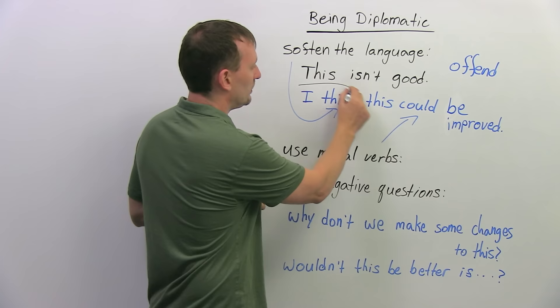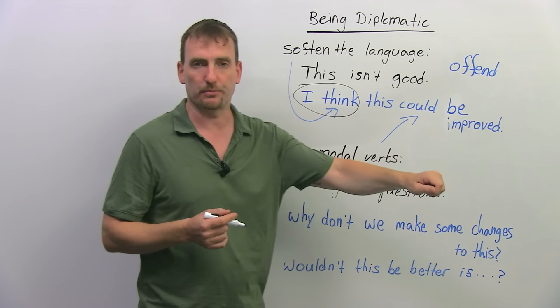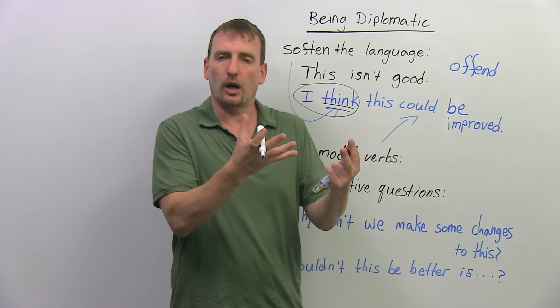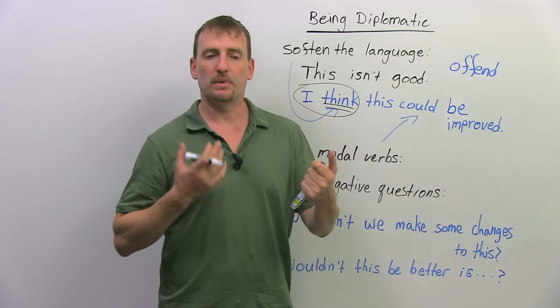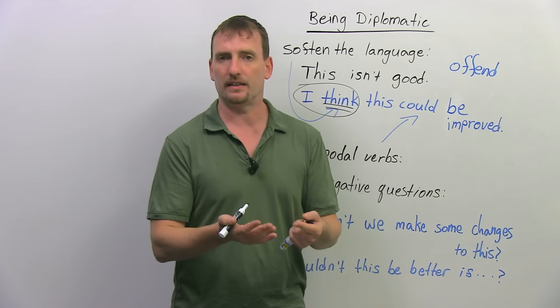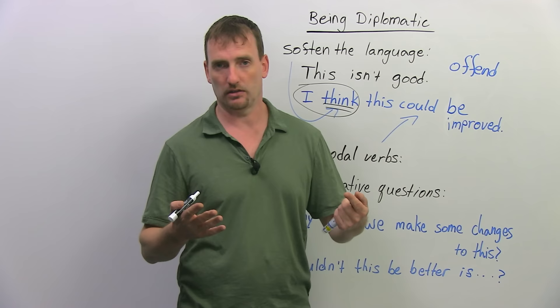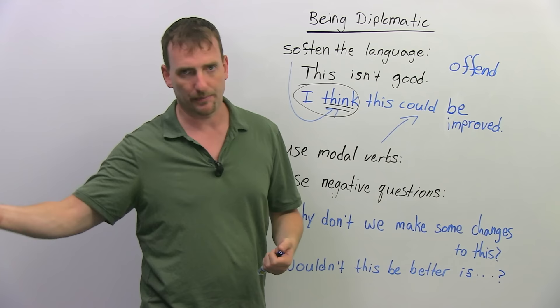So, what you can do is you can soften the language. Now, one way to do that is just to turn the statement of fact into an opinion. I think this could be improved. Now, as soon as you put, I think, basically what you're saying is, here's an opinion, and opinions are much easier to accept than statements. Now, why? Because you're allowed to have your opinion, you're allowed to have your opinion, everybody has an opinion. When you give an opinion, you're opening the door to a discussion, to a dialogue, right? And that's the whole point of diplomacy, dialogue, having a discussion about something.